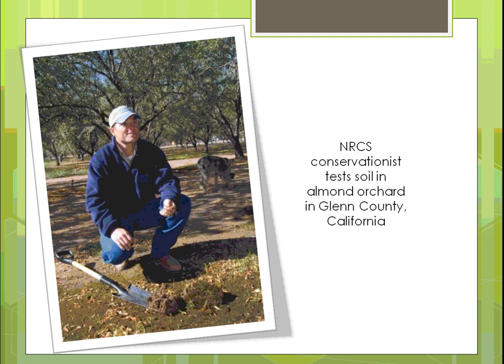Here's an example of a natural resource conservationist coming out to test your soil to find out if it has the nutrients it needs. This is happening in California, in what looks like an orchard — and you can see they have animals in their orchard too.